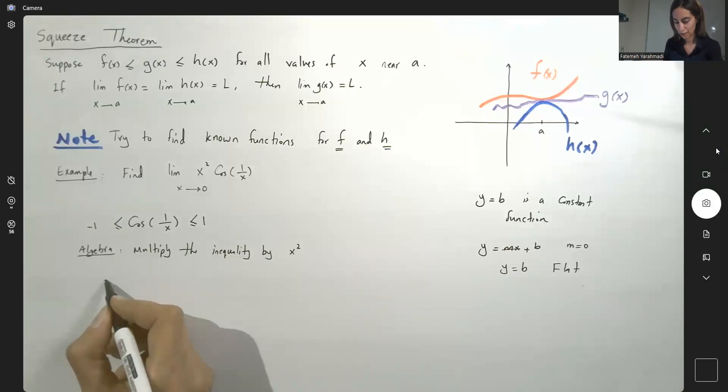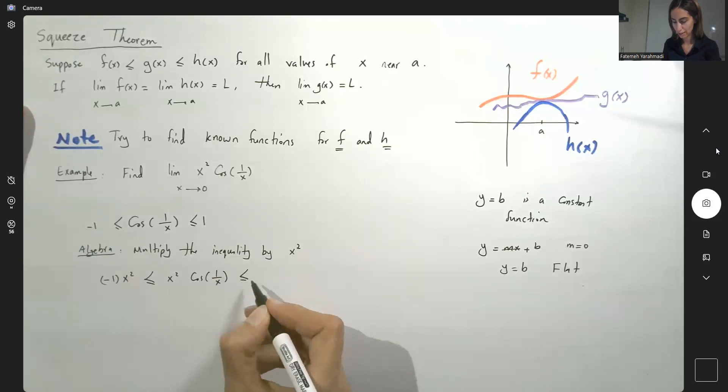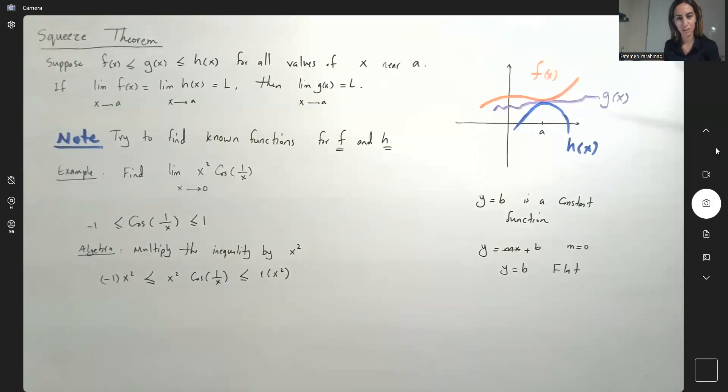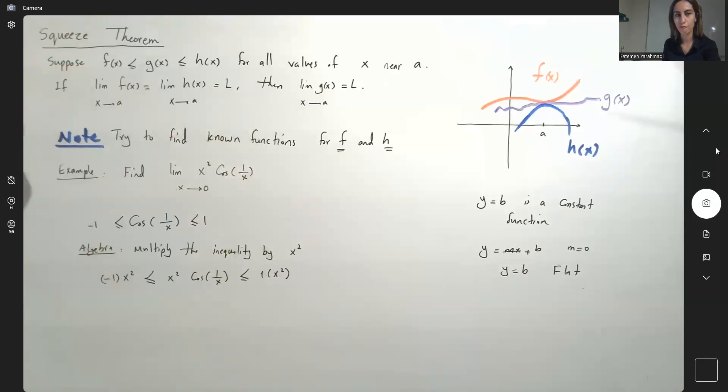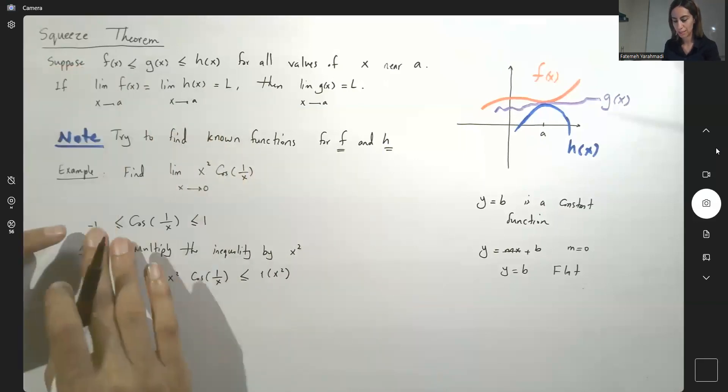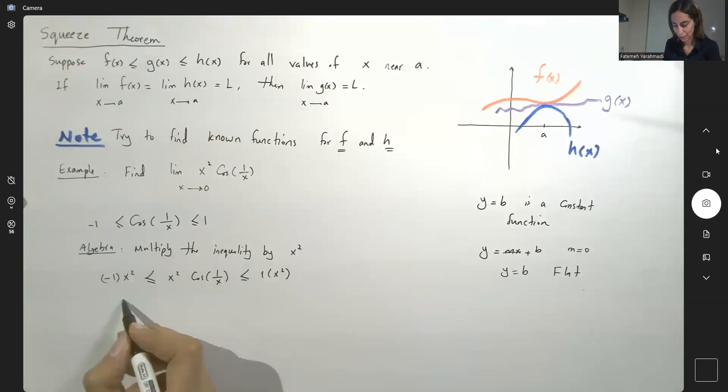What happens? You have negative 1 times x squared less than or equals to x squared times cosine of 1 over x less than or equals to 1 times x squared. These are the basic properties of sine and cosine that we know. So now you have negative x squared less than or equals to x squared cosine of 1 over x less than or equals to x squared.